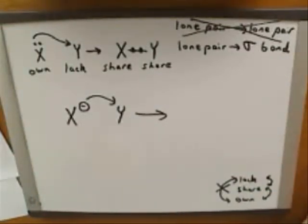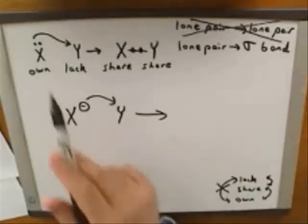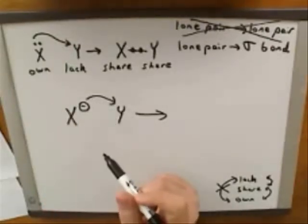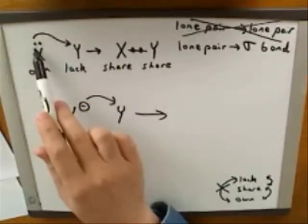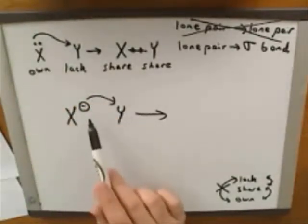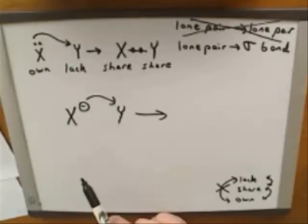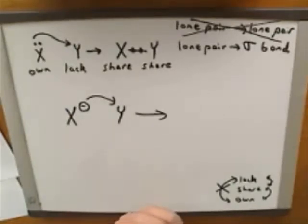Okay, go ahead and try drawing the products here. Pause the video and draw the products if you can. Now, how is this arrow different from what we had before? The difference is that in the previous picture, the tail of the arrow was on a lone pair, whereas in this picture, the tail of the arrow is on the negative charge. So we have to know what's the difference between having the tail on a lone pair and the tail on a negative charge.